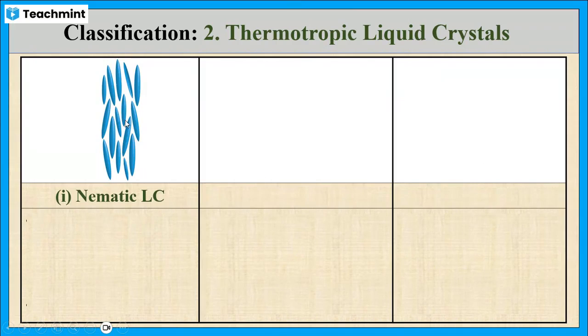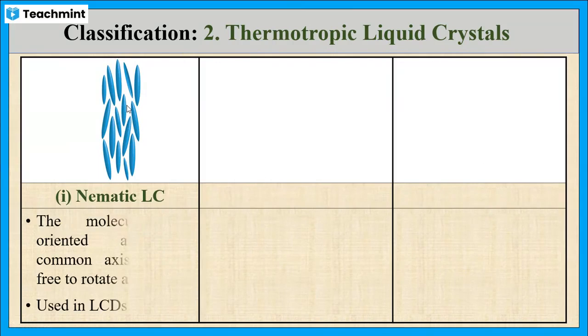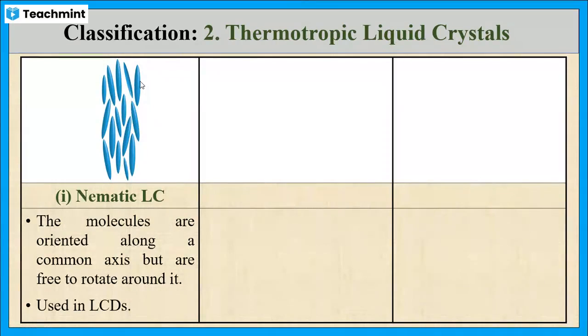In nematic liquid crystals, the molecules are oriented along a common axis but they are free to rotate around that axis. This type of liquid crystal is used in LCDs.